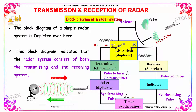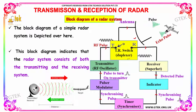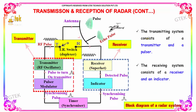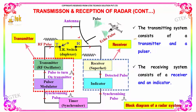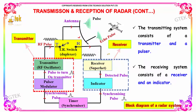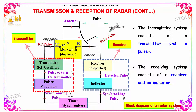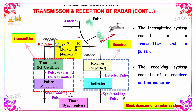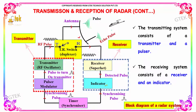Here is the block diagram of a radar system, and this is the echo pulse. The transmitting system consists of a transmitter and a pulser. The receiving system consists of a receiver and an indicator.